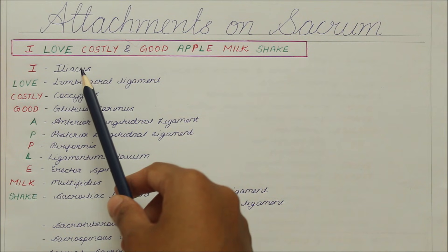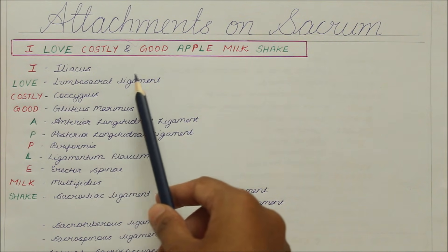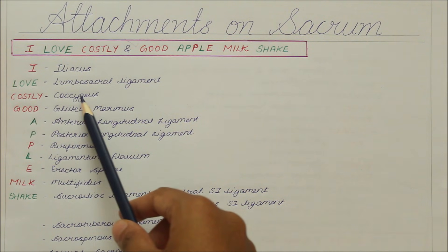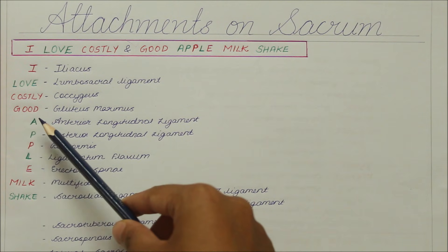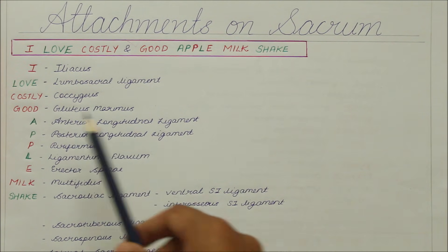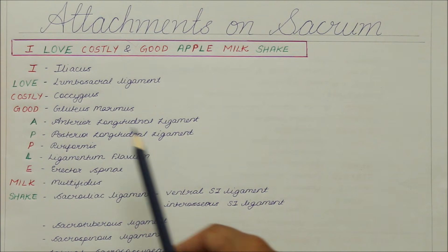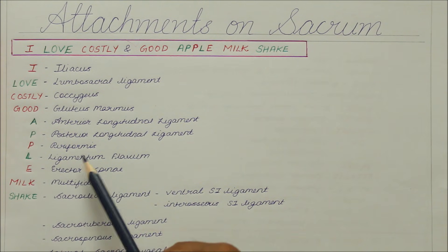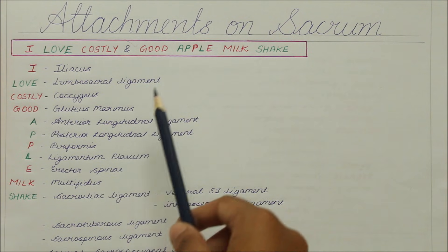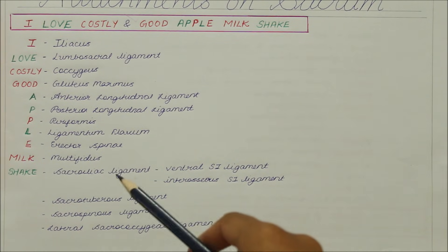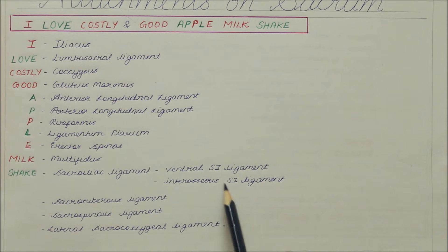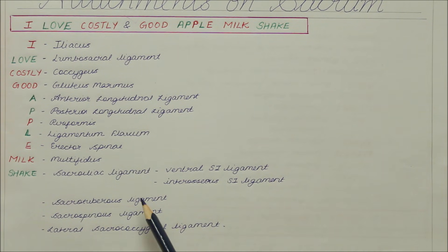I stands for the origin of iliacus; L in Love stands for the attachment of the lumbosacral ligament; C in Costly stands for the origin of coccygeus; G in Good stands for the origin of gluteus maximus. Apple is further divided: A for the attachment of the anterior longitudinal ligament, P for the attachment of the posterior longitudinal ligament, P for the origin of piriformis, L for the attachment of ligamentum flavum, E for the origin of erector spinae. M in Milk stands for the origin of multifidus. S in Shake stands for the sacroiliac ligament (including the ventral and interosseous sacroiliac ligaments), the sacrotuberous ligament, the sacrospinous ligament, and the lateral sacrococcygeal ligament.